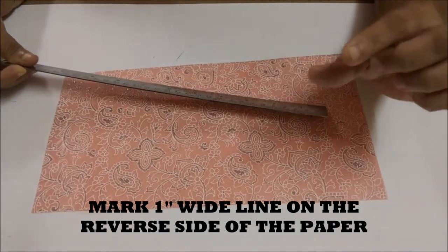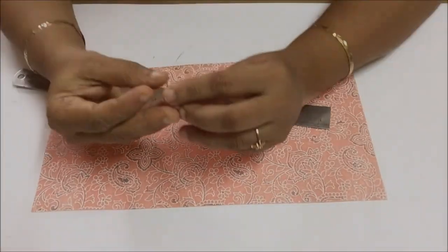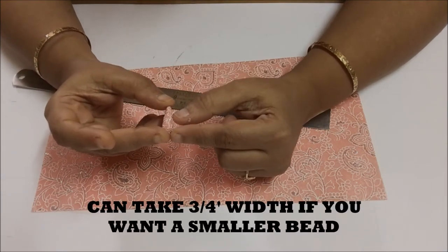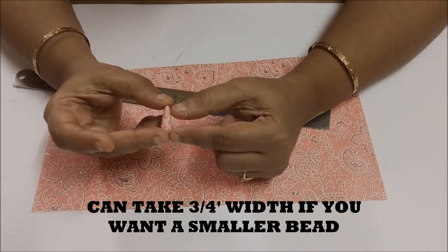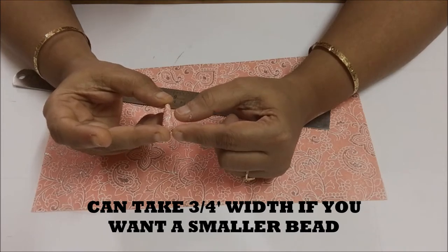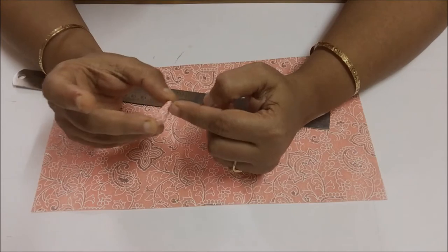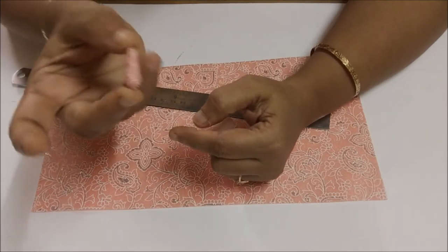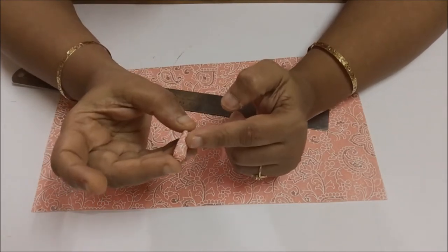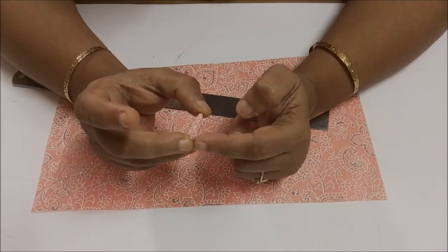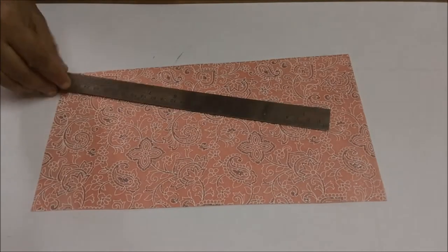If you want a smaller bead in height, you can take 3/4 inch also, or half inch. But the half inch won't be seen because since we want a longer bead, we are making a conical bead, it has to be long. So either you take 1 inch or 3/4 inch. I am taking 1 inch.